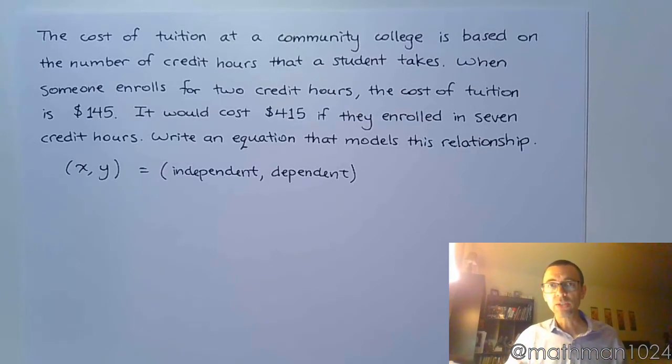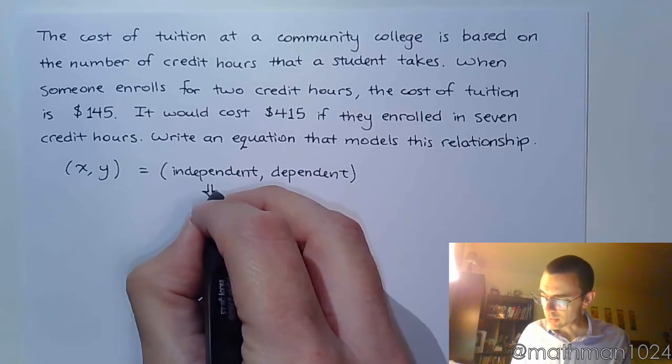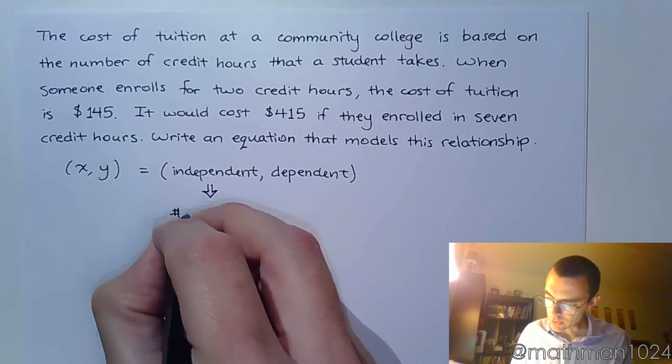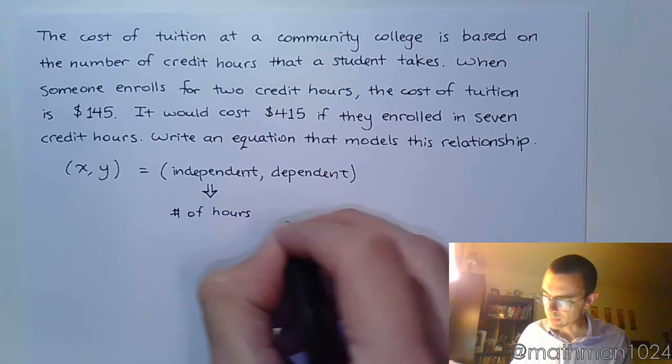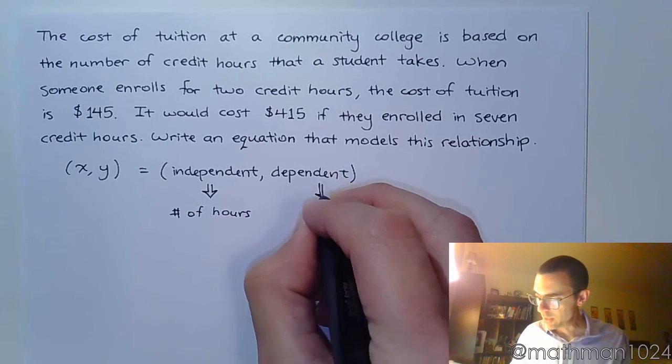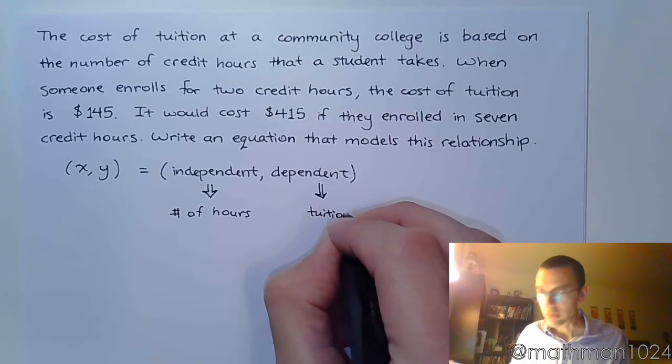Well, when you sign up for classes, you are the one who's controlling the number of hours you take. So you sign up for classes, and then the tuition is based on the number of classes or the number of credit hours you take. So in this example, what's independent is going to be the number of hours that you take. And the dependent part is going to be the tuition.